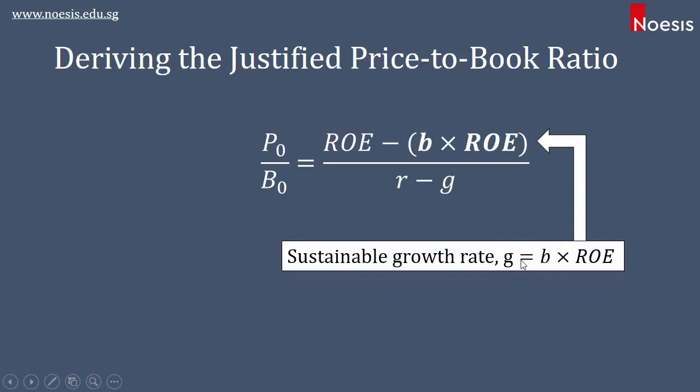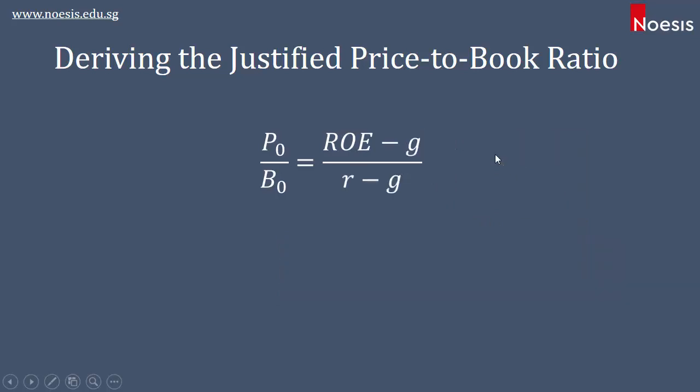And finally, substituting G into the above, we will have the justified price-to-book ratio.